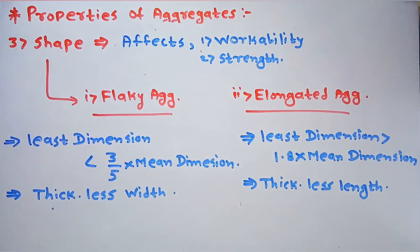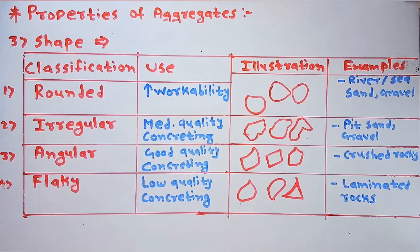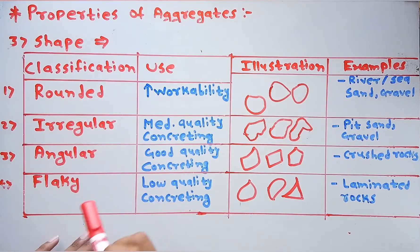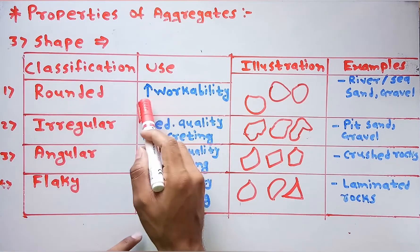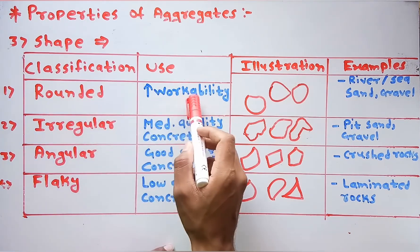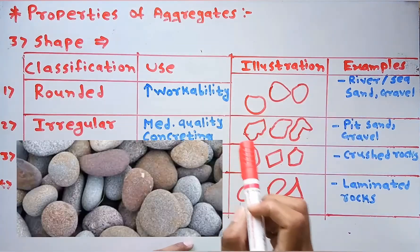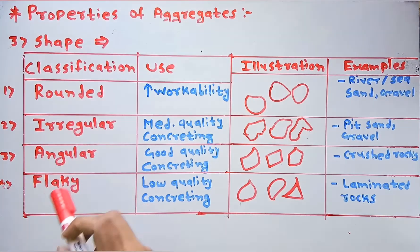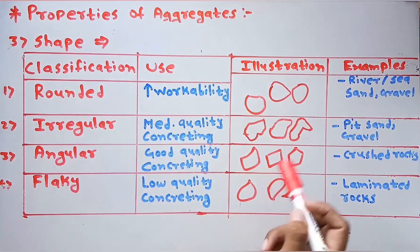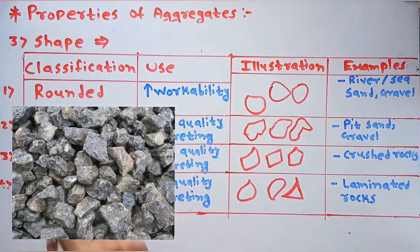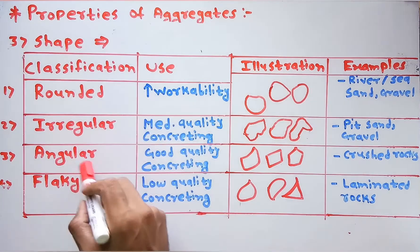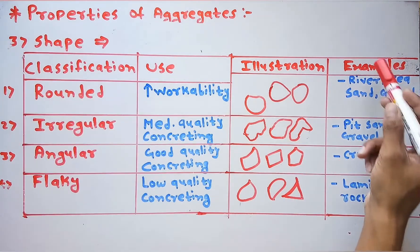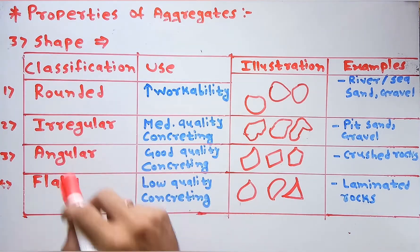On the basis of shape, we can classify all aggregates as rounded, irregular, angular, or flaky. Rounded aggregates give good workability but lower strength; examples are river or sea sand and gravels. Irregular aggregates are used where medium quality concreting is required; examples are pit sand and gravel. Angular aggregates are most suitable for good quality concreting; examples are crushed rock.